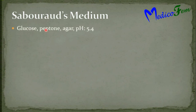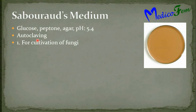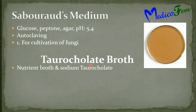Sabouraud's medium contains glucose, peptone, and agar with a slightly acidic pH of 5.4. It is sterilized by autoclaving. It is used for growth of fungi. This is the Sabouraud's medium.